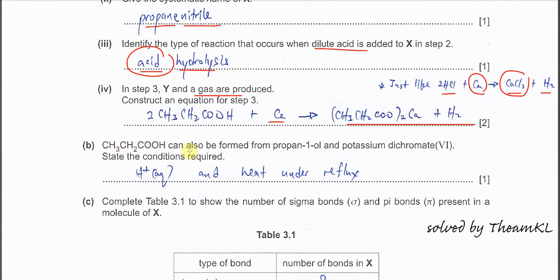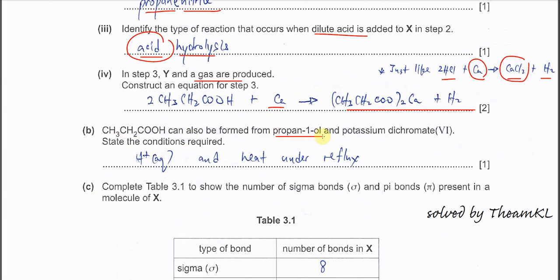Part (b): The propanoic acid also formed from propane-1-ol and the potassium dichromate. State the conditions required. You must put acid in there. Without acid, the potassium dichromate or this oxidizing agent, it cannot function. So potassium dichromate or KMnO4 that we normally use, it must be acidified.